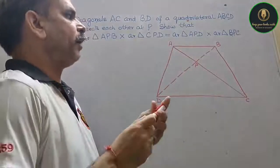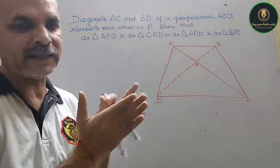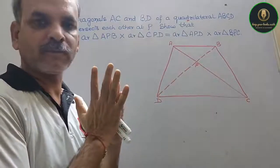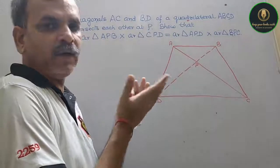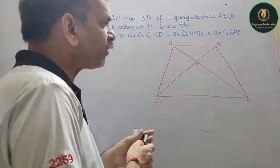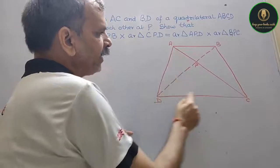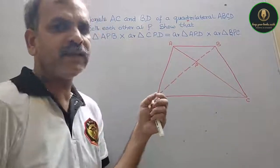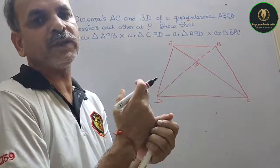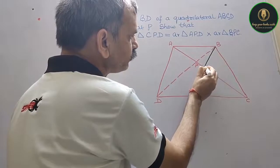Now, if you take one diagonal, how many triangles are formed? Two triangles. So we have four triangles total here. We will consider the triangles formed. By diagonal AC and BD, we get triangles ABP, BPC, ADP, and DPC.